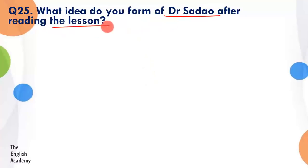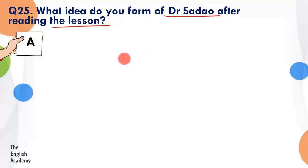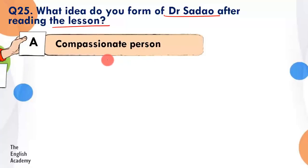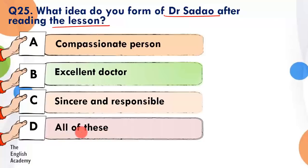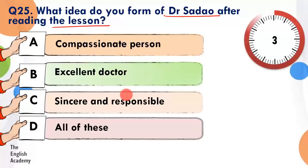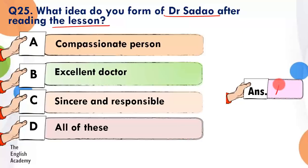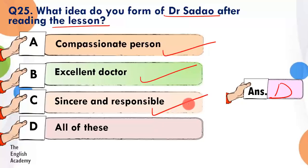Question number 25: What idea do you form of Dr. Sadao after reading the lesson? Option A: he was a compassionate person. Option B: he was an excellent doctor. Option C: he was sincere and responsible. Option D: all of these. The answer is Option D — all of these. He was compassionate, he was a good doctor, he was sincere and responsible also. So our answer is Option D — all of these.